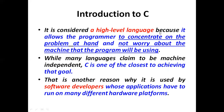C is called a high-level language because it allows programmers to concentrate only on the problem. There is no need to consider which type of hardware is being used or on which machine the program is being developed. Programmers only concentrate on the project, and do not need to worry about the machine the program will be using.